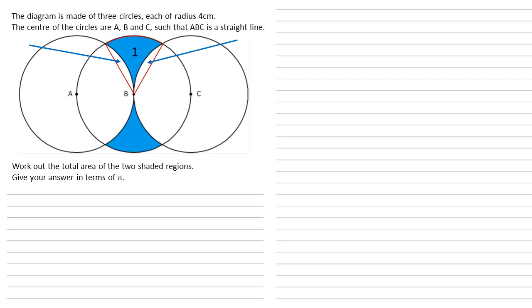What we can also see is that we've got two equilateral triangles here. We know they're equilateral because each of their edges is the radius of at least one of the circles. So each edge is 4 centimeters and because they're equilateral each angle is 60 degrees.